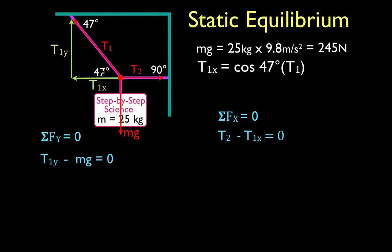T1y is opposite this 47 degree angle in this right triangle, so that tells us that T1y is equal to the sine of 47 times T1. Okay, I cannot write a term for T2. We're going to have to solve for T2. Alright, but now I have terms for T1y, mg, and T1x, and I can substitute those in and then solve for T1 and T2.